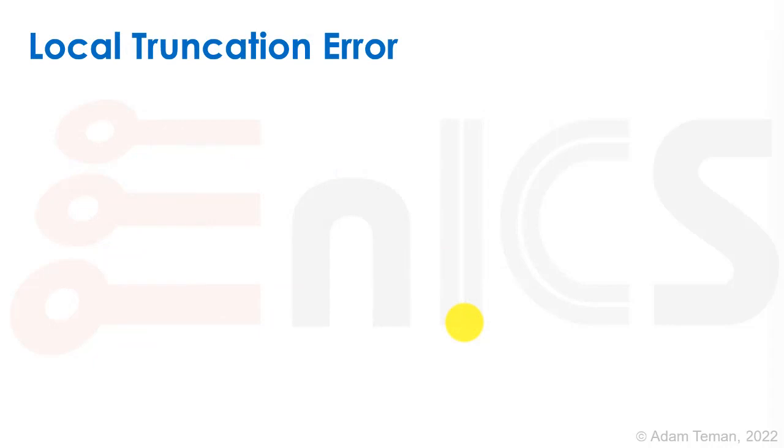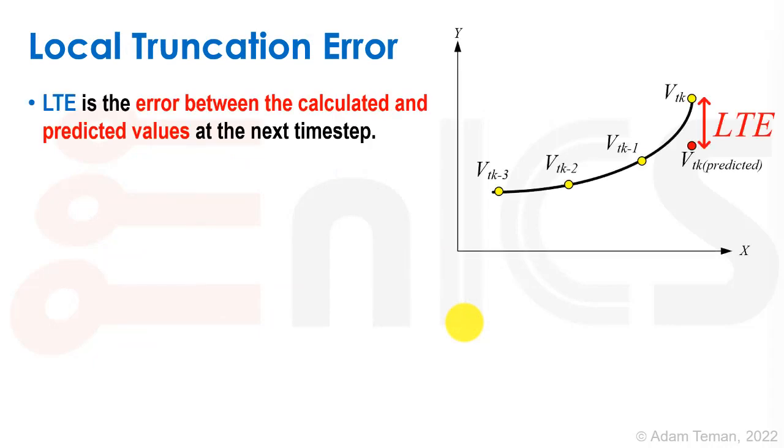What is this local truncation error? It's the error between the calculated and predicted values at the next time step. We had Vtk minus 1, minus 2, minus 3. This was our current prediction because we took this and should have gotten over to here. But when we solved it, we found that Vtk is over here. So we have an error between our calculated point and our predicted solution, and that error is the LTE. If it's too big, we make our guess over here, find we should have been here, and saw our prediction should have started curving.